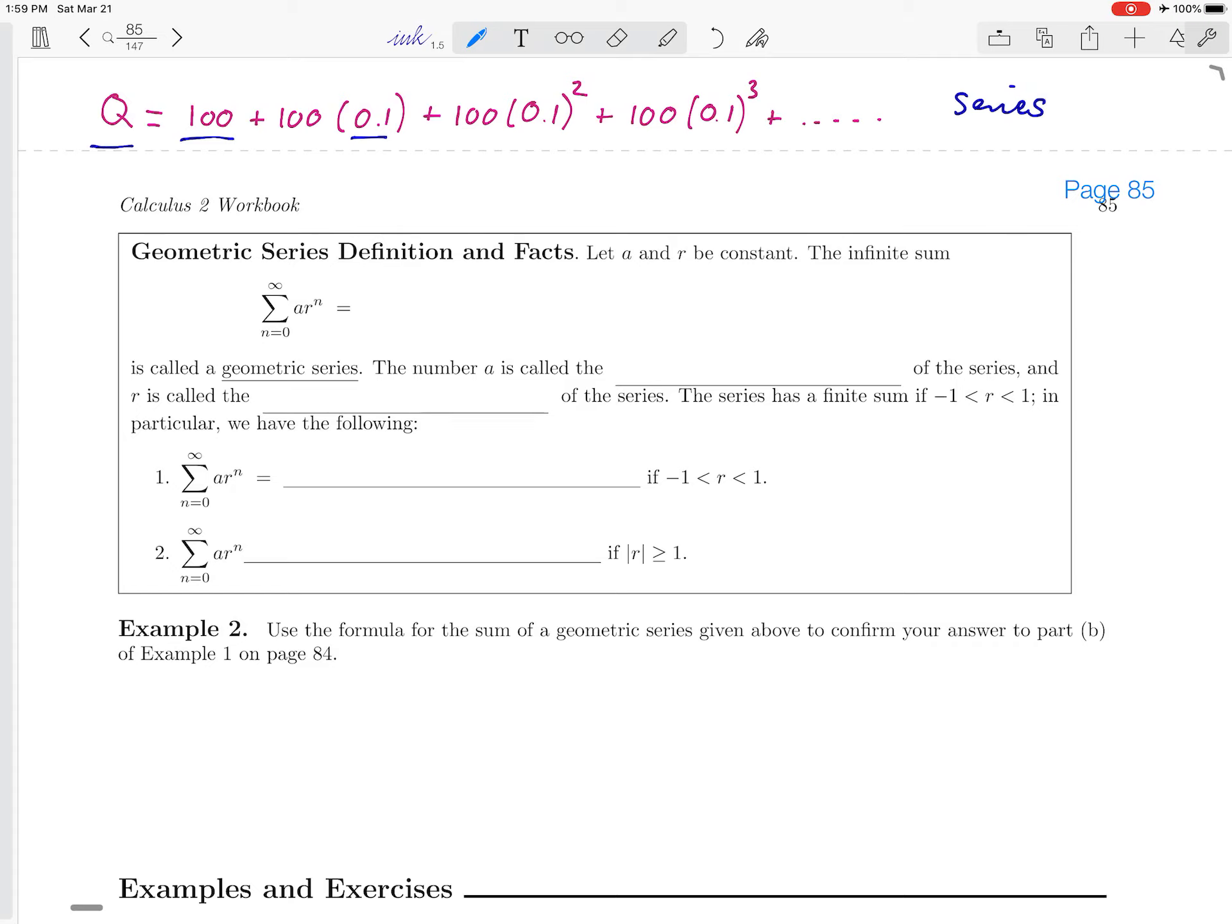So to get from 100 to the first term to the second term, you multiply by 0.1, and to get to the next term, you multiply by 0.1, and so on. Series that have a structure like that are called geometric series. And we can describe them in general. So this is just an example of a geometric series.